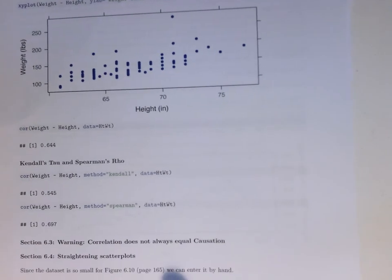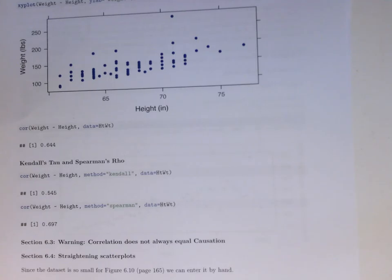The correlation function, COR, allows us to calculate the correlation. If we want to calculate something else like Kendall's tau or Spearman's rho, we can just go ahead and add those options here.